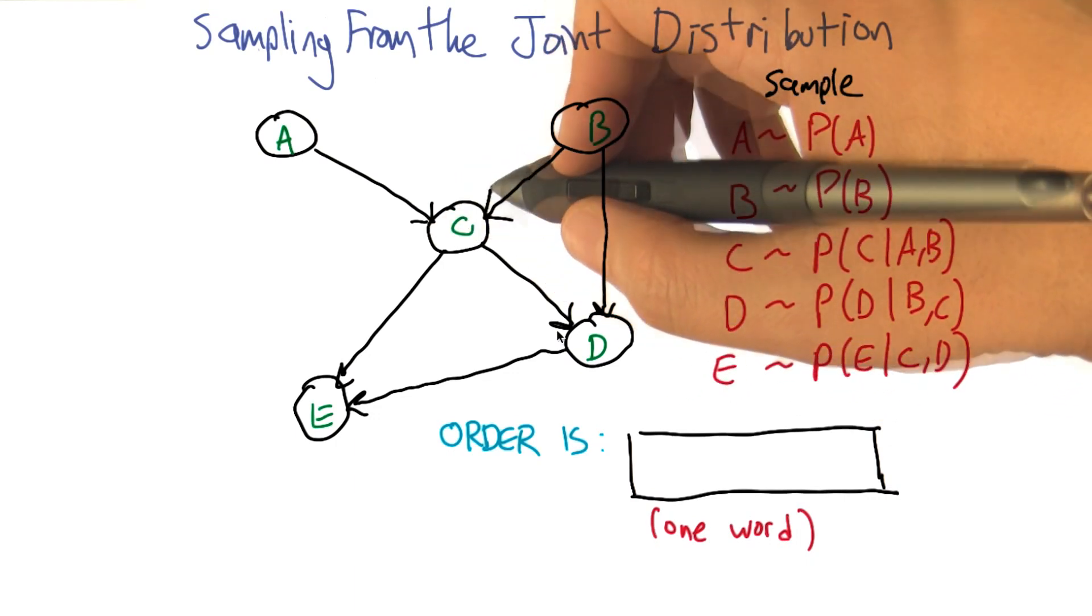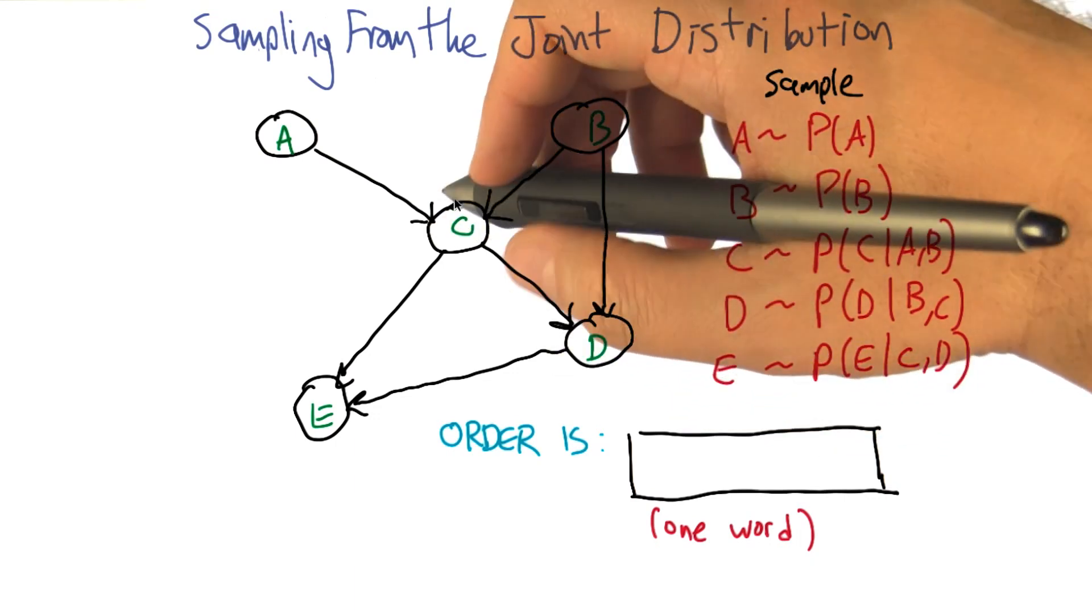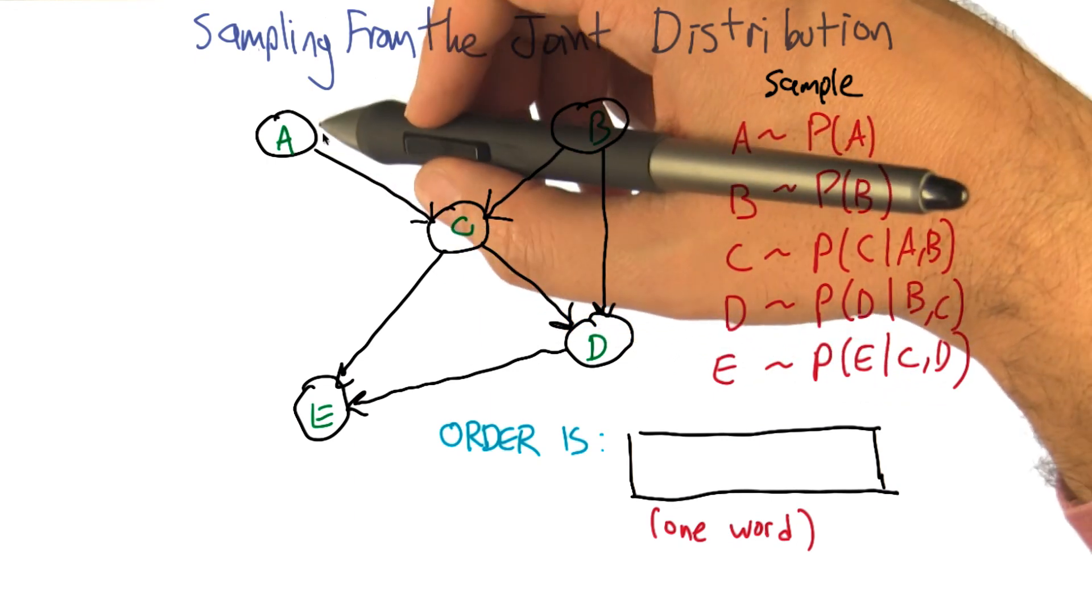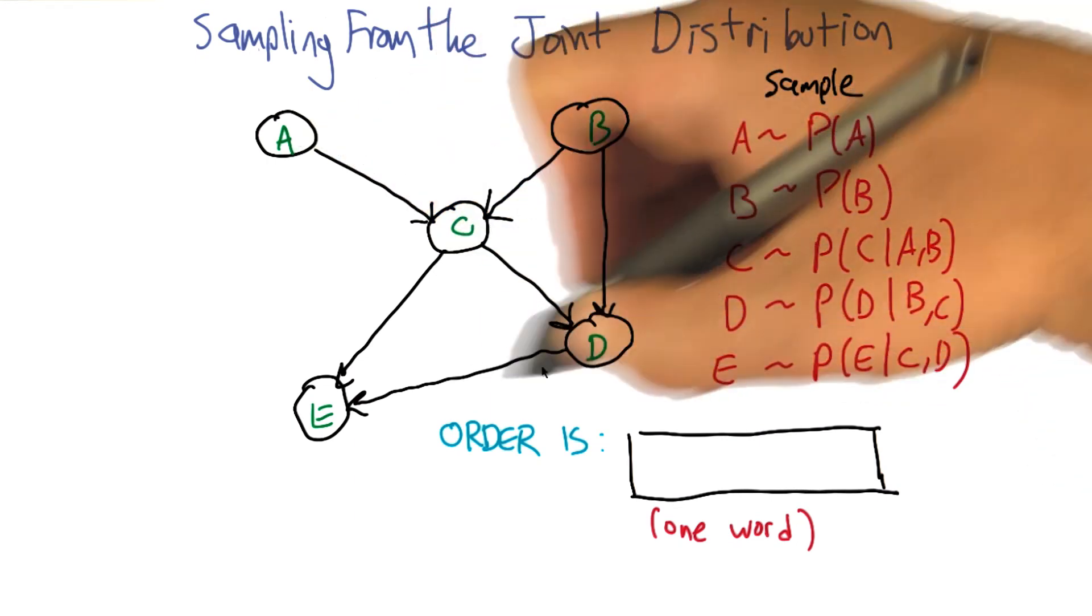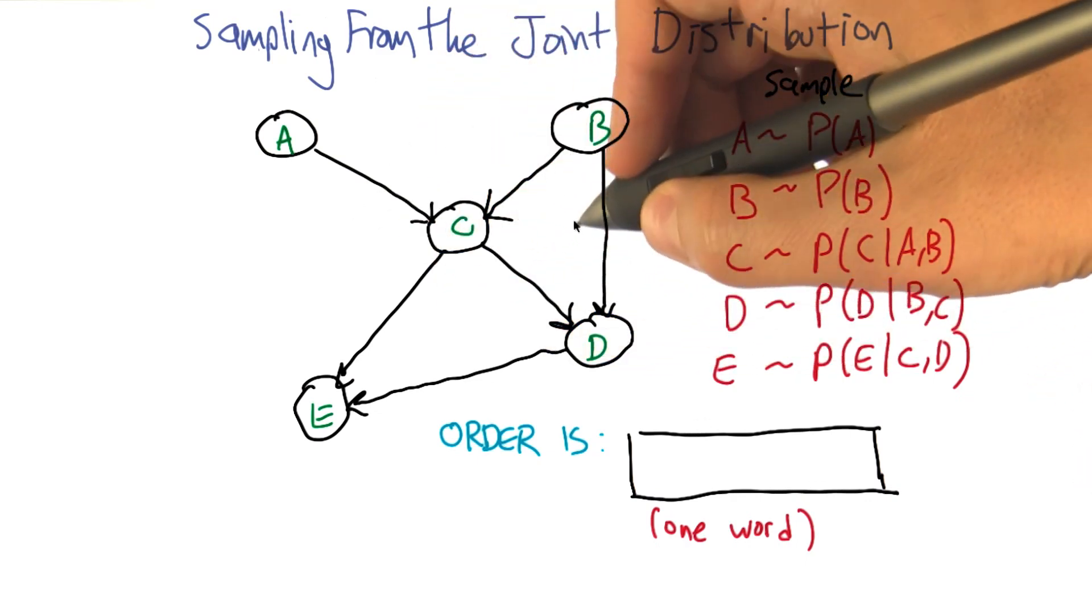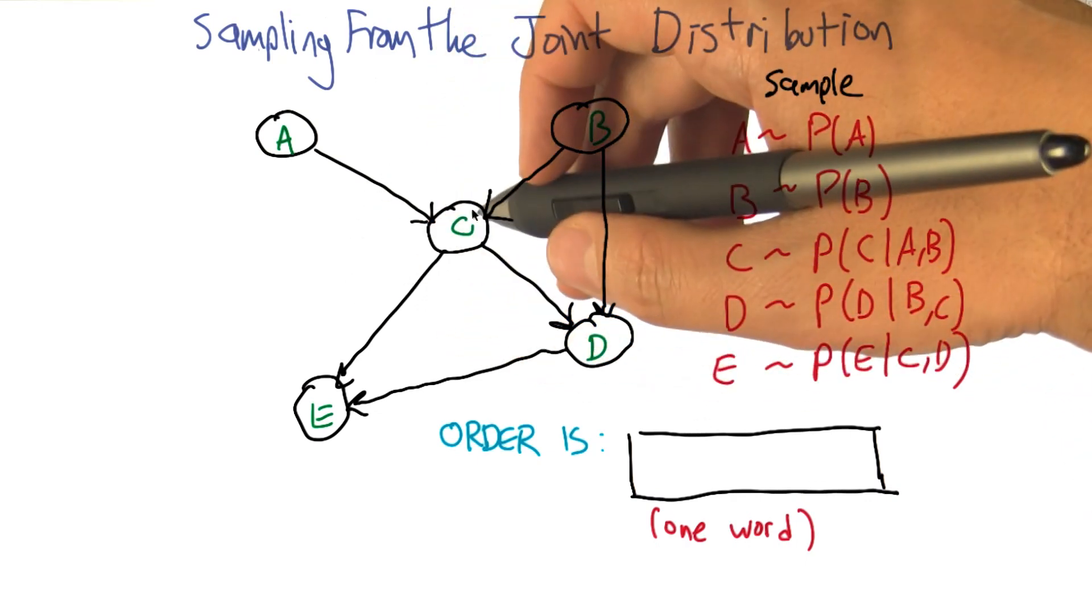So how would we go about actually sampling from this distribution? So let's say that we wanted to, just as an example, see what A, B, C, D, and E might look like in a randomly selected example from the distribution that this network represents.